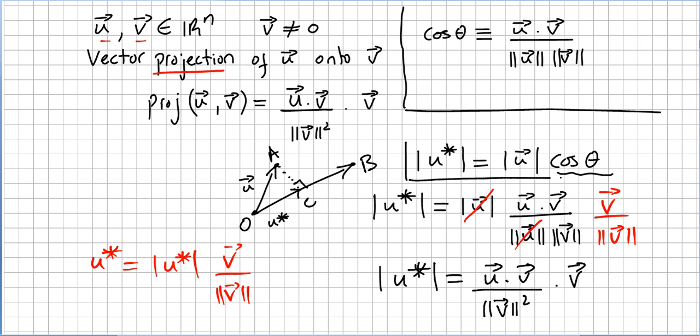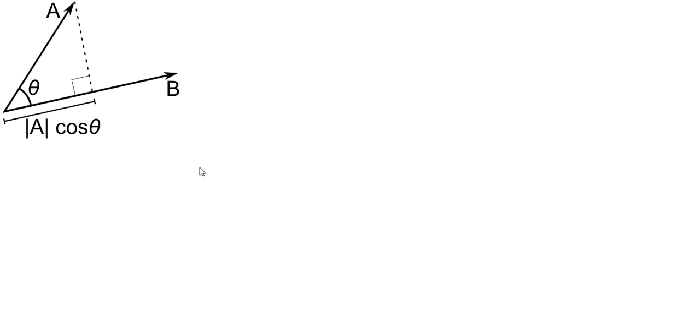So the concept you have of vector projection in physics is the same as this concept of vector projection. Probably in physics books you saw something like this: a vector a and then a vector b, and the vector projection of a onto b is the norm of a times the cosine of theta. So this is the projection and this is the right angle, of course.